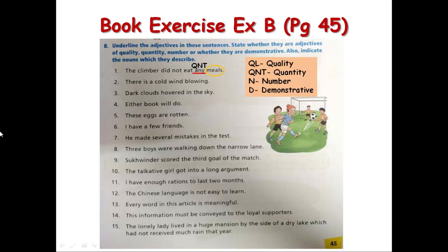Next sentence: 'There is a cold wind blowing.' The adjective is 'cold', used for the noun 'wind'. Since cold tells you about the quality of the wind, we write QL over it. Next: 'Dark clouds hovered in the sky.' The word 'hovered' means roamed about. Dark is the adjective, clouds is the noun, and dark describes the quality of the clouds — so this is also adjective of quality, QL. Next: 'Either book will do.' Either is the adjective for the noun 'book', and this is an adjective of number because you are talking about one book at a time.